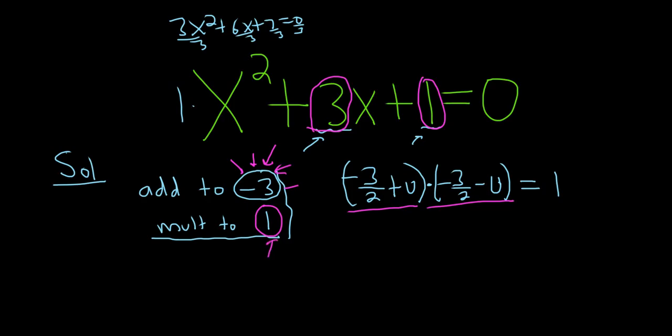Now you can use the difference of squares formula. Remember, if you have a plus b times a minus b, that's going to be a² minus b². So this will be simply a² would be 9 fourths, right?